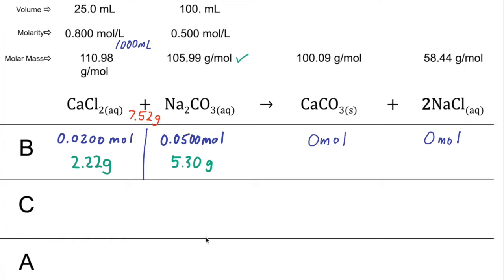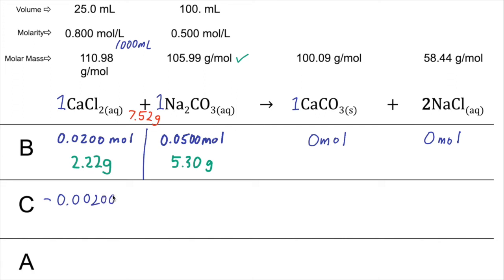On the change line, the mole ratio that reacts reflects the coefficients in the balanced chemical equation — there's an implied coefficient of 1 on each substance except NaCl, which has a coefficient of 2. This is also a limiting reactant problem. There are 0.02 moles of CaCl₂ and 0.05 moles of Na₂CO₃. Because they react in a one-to-one ratio, 0.0200 moles of each will react, listed as −0.0200 moles for both reactants.